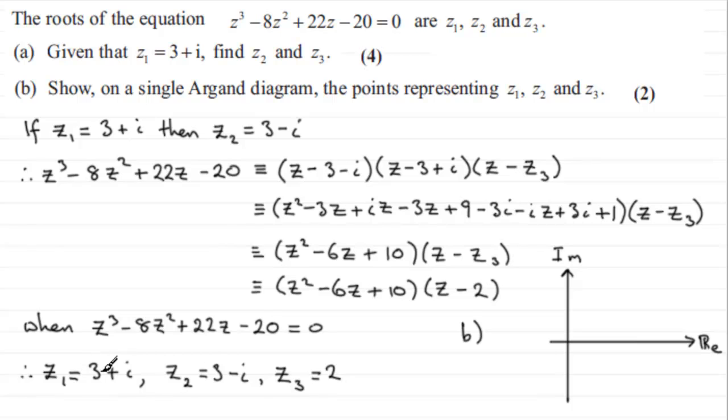So for z1, 3 plus i. Let's just put that in. 3 across, 1 unit up. And you're going to get something like this. I'm going to mark it in with an arrow there. Z1. And I'm going to say that that is 3 plus i. You could, if you wanted to, just put a point there and then put the coordinates 3, 1.